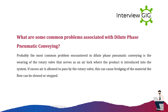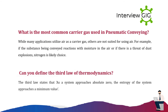What are some common problems associated with dilute phase pneumatic conveying? The most common problem is the wearing of the rotary valve that serves as an air lock where the product is introduced into the system. If excess air is allowed to pass by the rotary valve, this can cause bridging of the material, and the flow can be slowed or stopped.